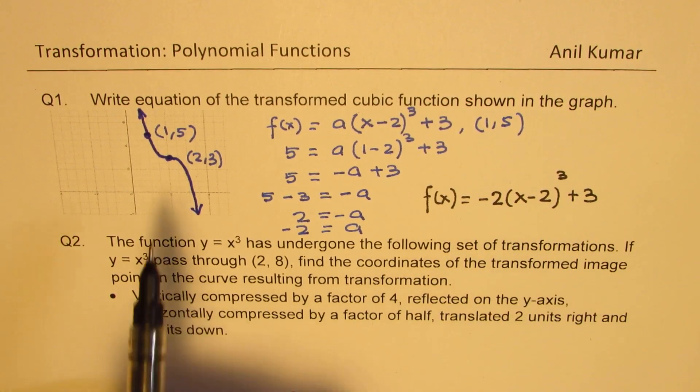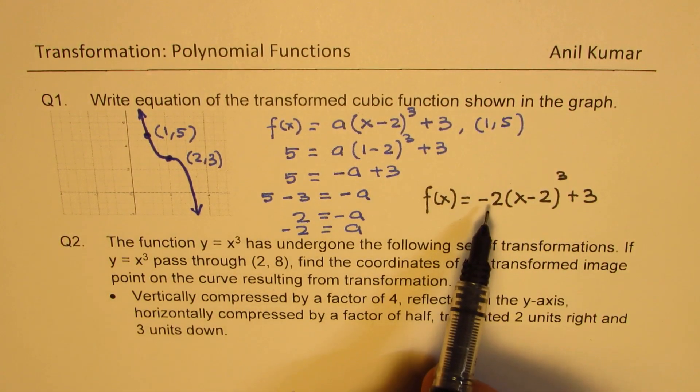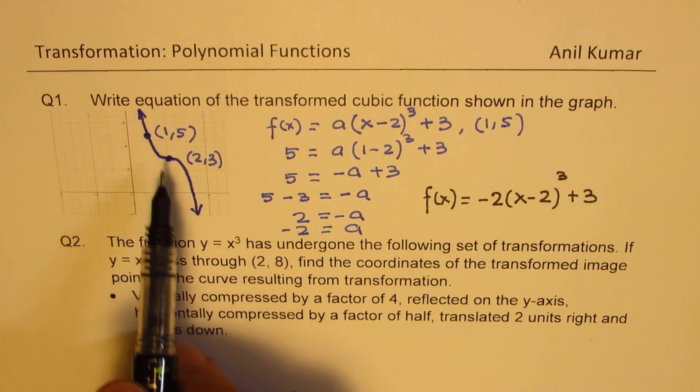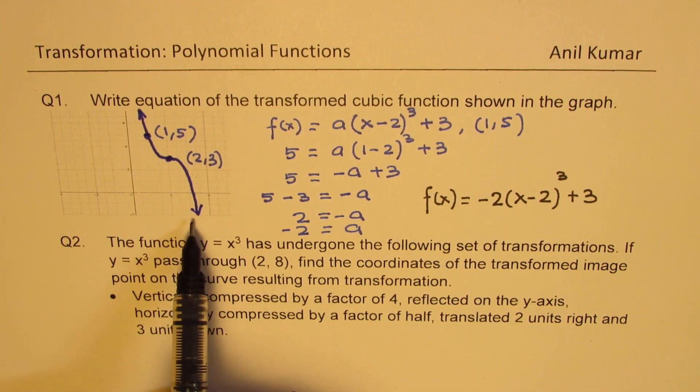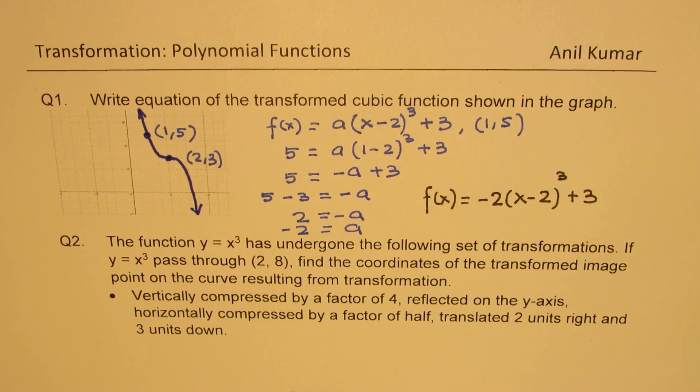It makes sense. If you check the end behavior, that negative tells you that left side is up, and the right side is going towards negative infinity. Perfect. So I hope that is absolutely clear.